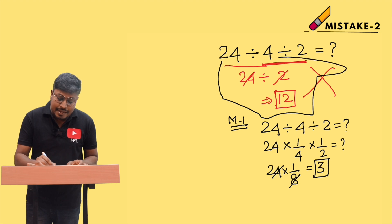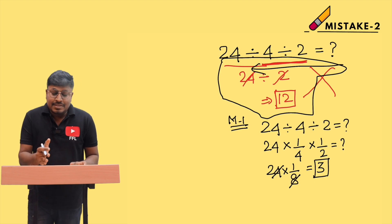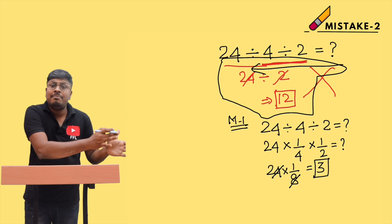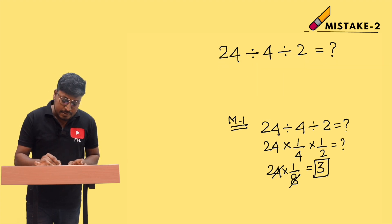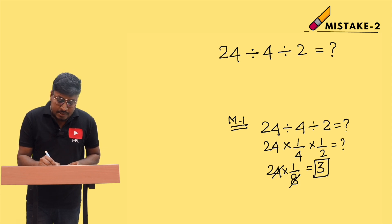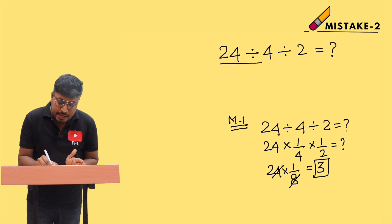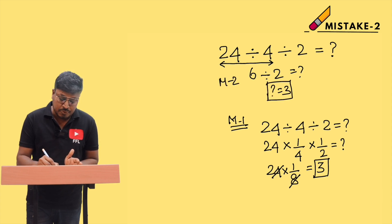The mistake students make is solving from right to left — dividing 4 ÷ 2 first. Method 2 is to solve from left to right: 24 ÷ 4 = 6, and then 6 ÷ 2 = 3. The answer is 3. Always proceed from left to right, not right to left.